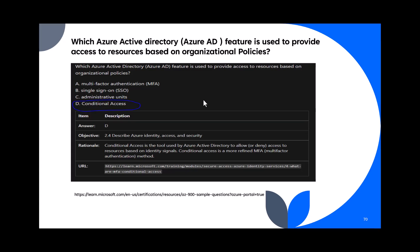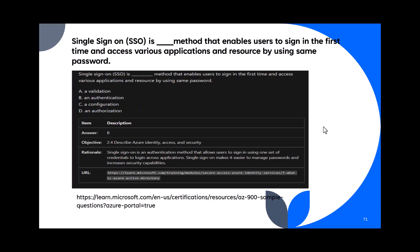Question 70: Which Azure Active Directory feature is used to provide access to resource-based and organizational policies? The options include MFA, SSO, administrative units, and conditional access. An organization has a policy to allow only certain compliant devices — that's conditional access policy. The answer is conditional access, a tool within Azure AD used to allow or deny access to resources based on identity signals.